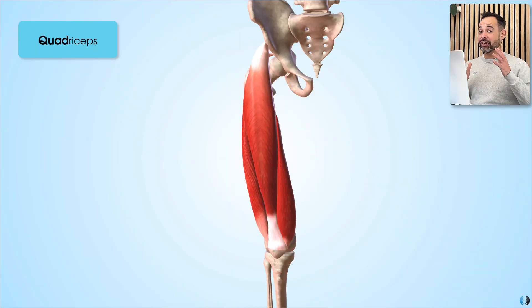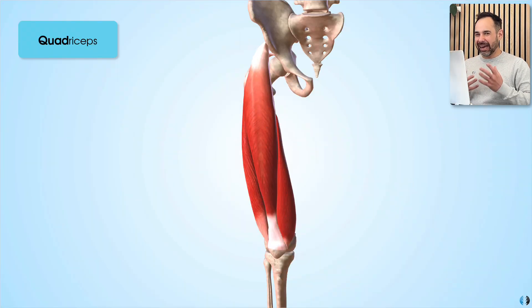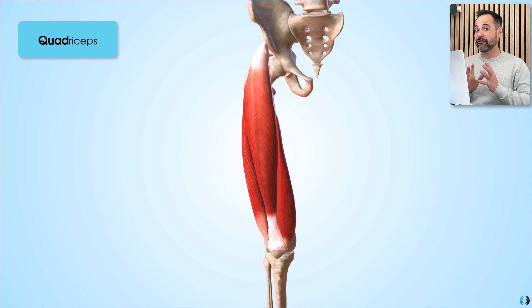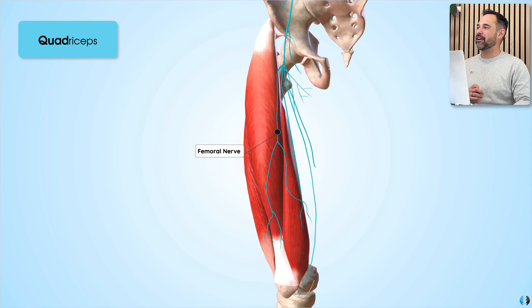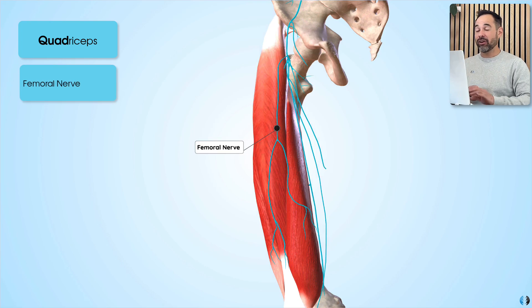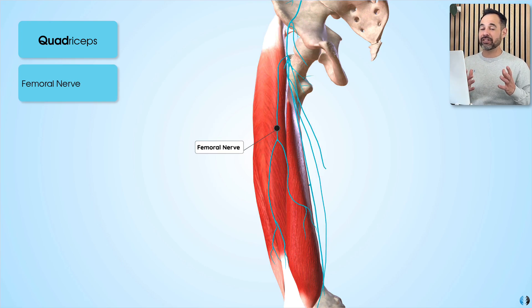As for the nerve supply for these muscles, the key nerve that runs down the anterior portion of the femur is the femoral nerve, and all four muscles take their nerve supply from this nerve.